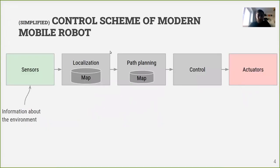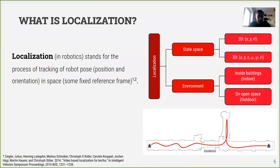In the last lecture, we saw this scheme of mobile robot control and discussed sensors used in modern robots. Today we move to the second part of the scheme: localization. Using sensor readings, we will try to localize our robot in space. Our goal is to define where we are as a robot. Localization, at least in robotics, stands for the process of tracking robot pose — which is position and orientation in space — relative to some fixed reference frame, such as a map of a predefined environment.